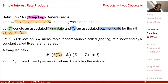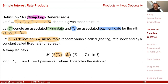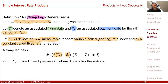The next generalization of my swap leg: I allow that it pays some floating index plus an additional constant. So I have a general floating index — some F(ti_f), the corresponding fixing date measurable random variable, which we call the floating rate. In addition, there is a constant sometimes called the spread, which we add to this rate. What we pay is the sum of the two. It's fixed at the fixing date ti_f and paid at the payment date ti_p.